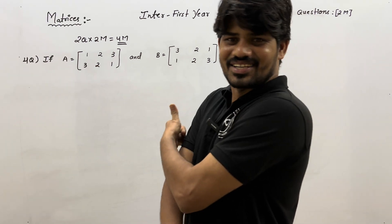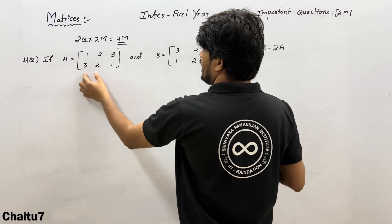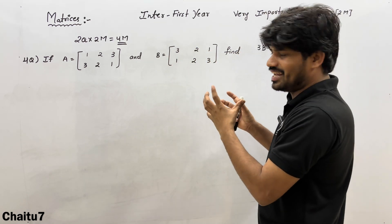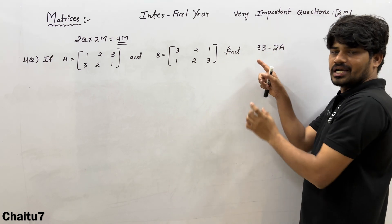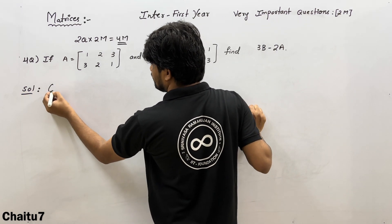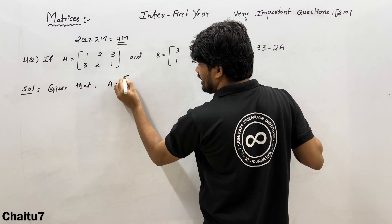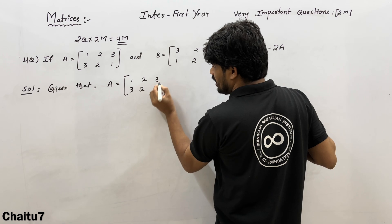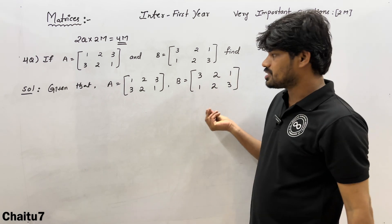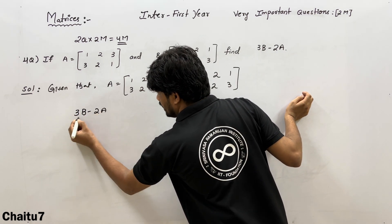Now we are going to the fourth question — also simple. Given A = [1, 2, 3; 3, 2, 1] and B = [3, 2, 1; 1, 2, 3], find 3B − 2A. We write both matrices. First compute 3B: multiply 3 into matrix B.